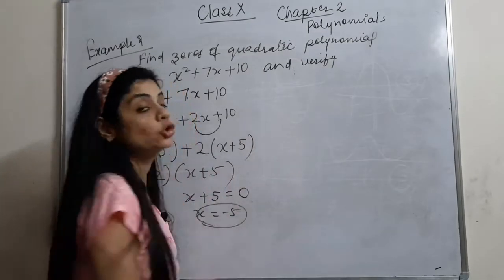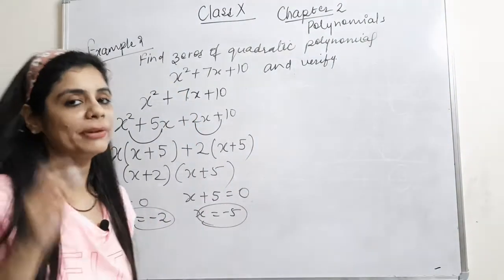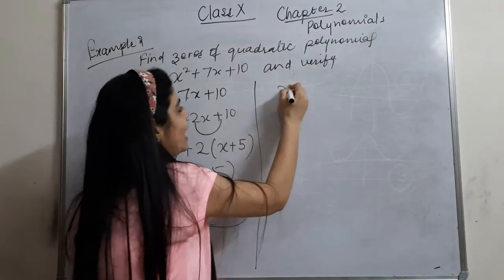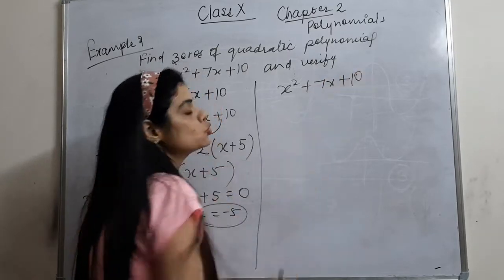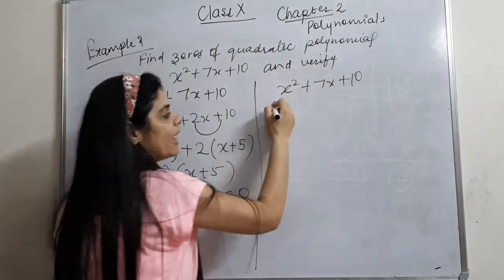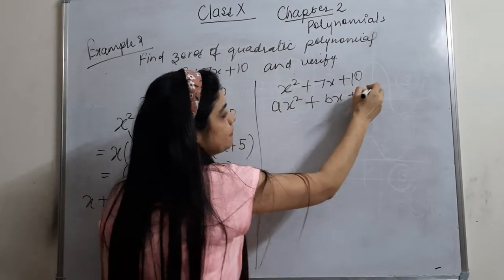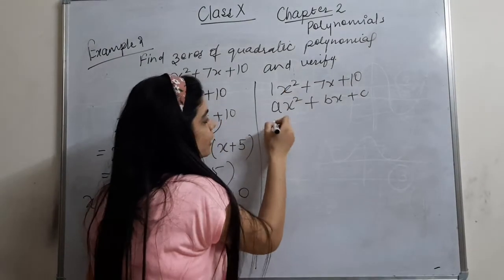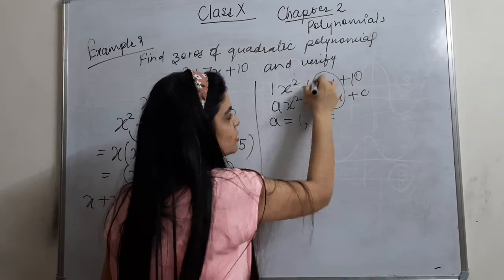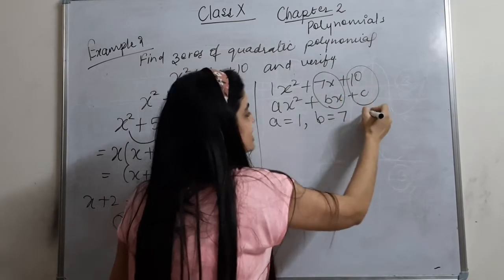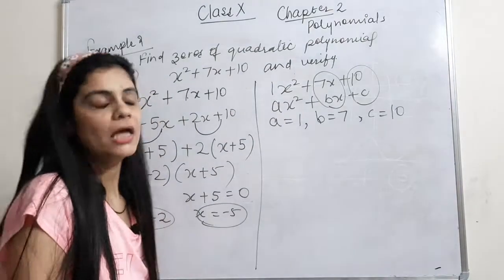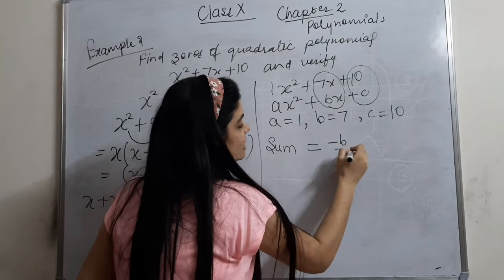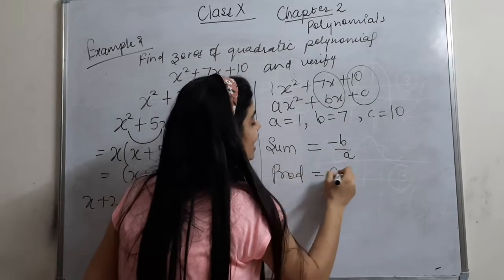Now for the verification method, which we discussed in the introduction video: we compare the given quadratic polynomial with the general quadratic polynomial ax² + bx + c. Comparing x² + 7x + 10, we get a = 1, b = 7, and c = 10. The sum of zeros is −b/a and the product of zeros is c/a.